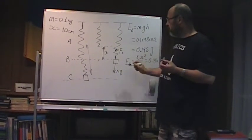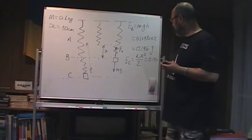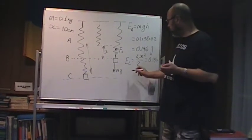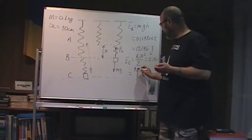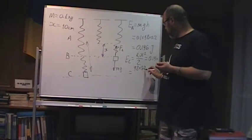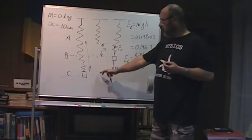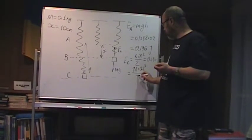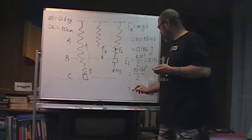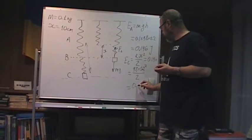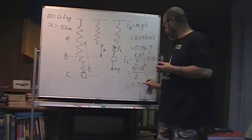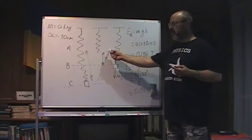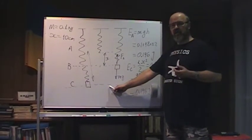We can check. K we have found that was 9.8 times 0.2. Here spring stretch 0.2, 0.2 squared divided by 2, and that will be 0.196. So as we can see, gravitational potential energy only at A, here only strain potential energy at C.